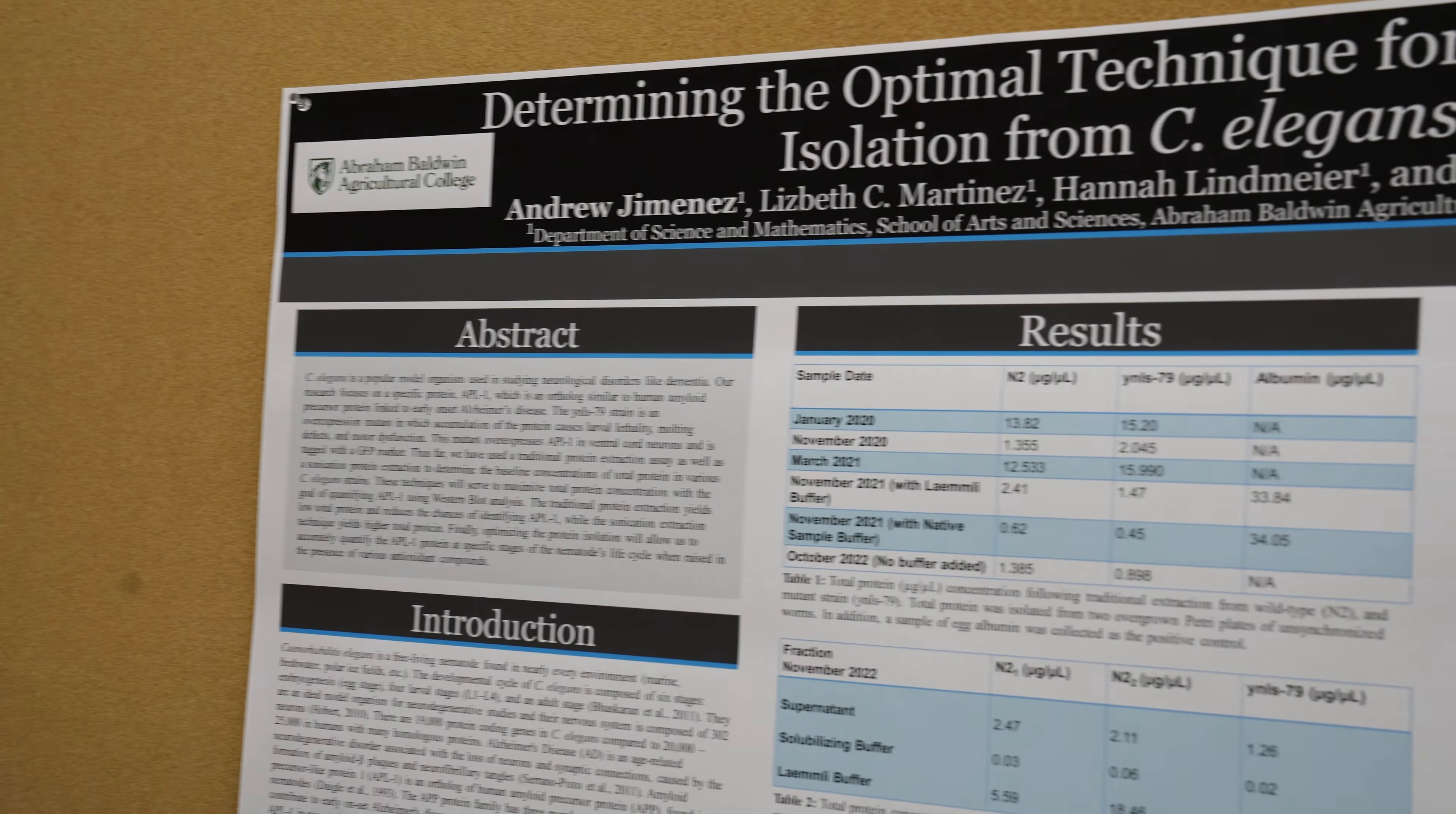C. elegans is a tiny microscopic worm. There's a protein found in those worms that causes them to have problems growing or molting out of their cuticle.